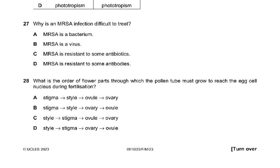Question 27: Why is MRSA infection difficult to treat? MRSA is a bacterium. It is resistant to some antibiotics — not to antibodies. The question asks why it is difficult to treat, so the correct answer is that MRSA is resistant to some antibiotics.